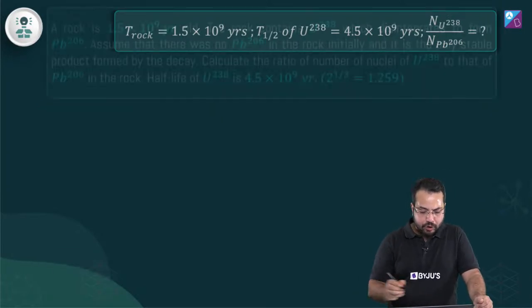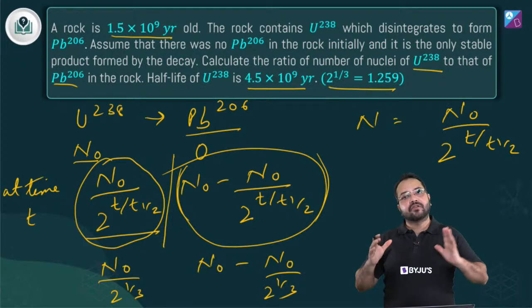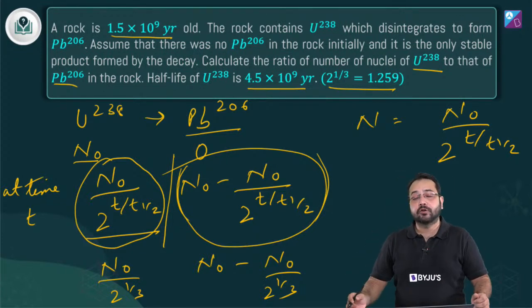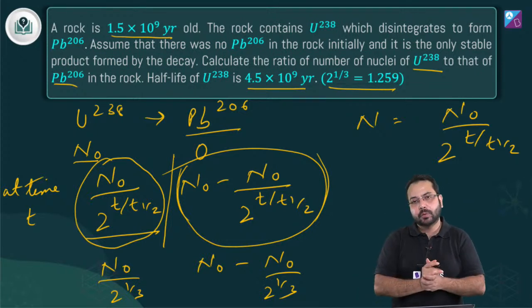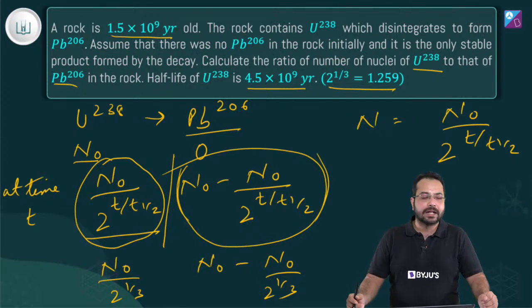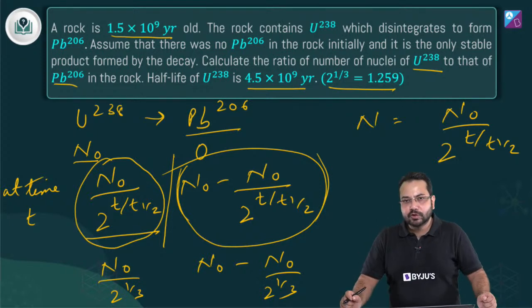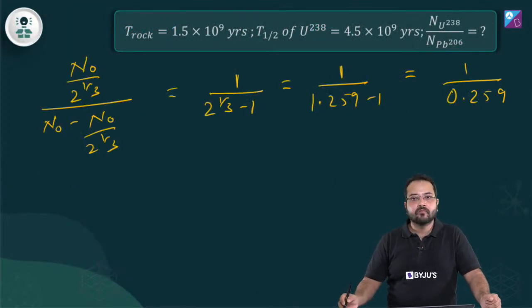The answer is approximately 3.86. Remember N = N₀ / 2^(t/t_half) — this is another form of the standard decay equation and it can ease calculations considerably. If there's any confusion, make use of the live session and ask.